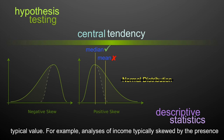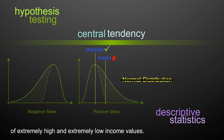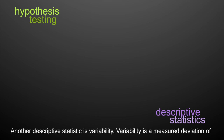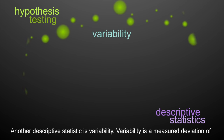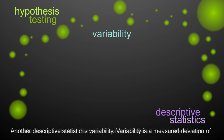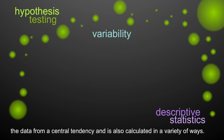For example, analyses of income typically examine the median, because income is typically skewed by the presence of extremely high and extremely low income values. Another descriptive statistic is variability — a measured deviation of the data from a central tendency, calculated in a variety of ways.